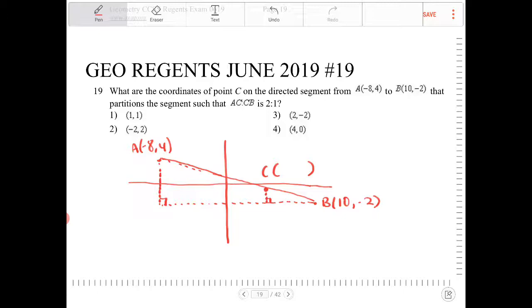So horizontally I'm going from -8 to positive 10, that is a distance of 18. And then vertically I'm going from positive 4 to -2, that is a vertical distance of 6.